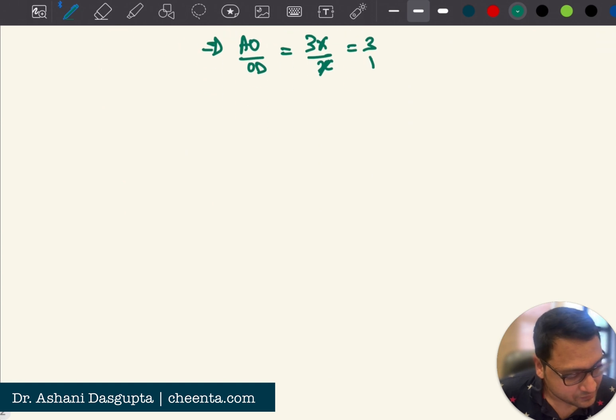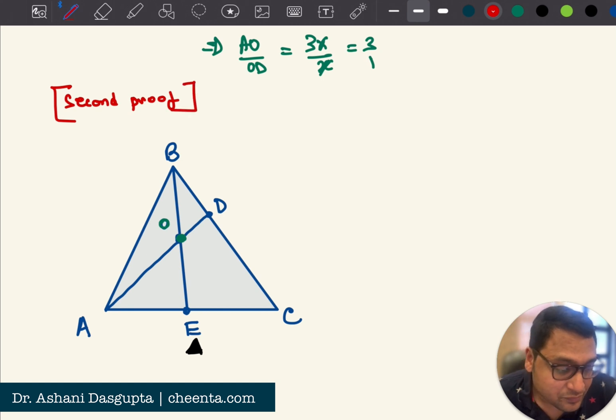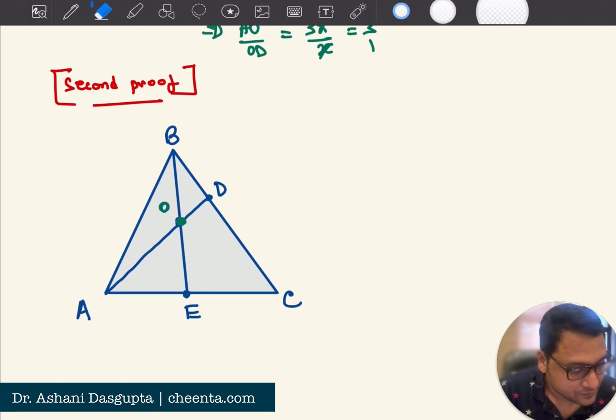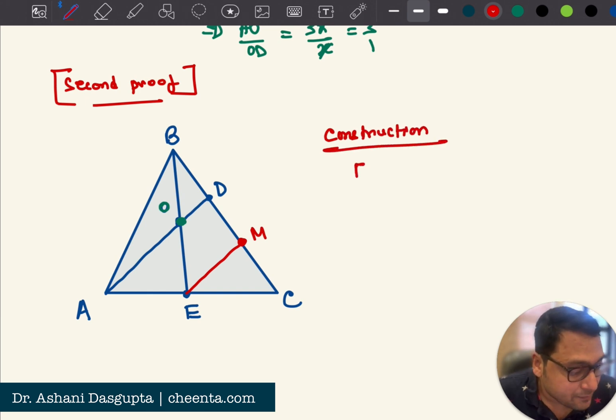So let me just come here. So here is the second proof. The second proof and this was actually hinted at the CMI entrance. So this problem is from CMI entrance and they gave this one as a hint. This particular proof that I'm going to use. So the hint was this that draw a line through E parallel to AD.